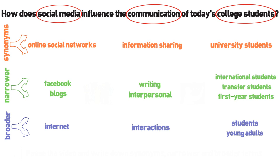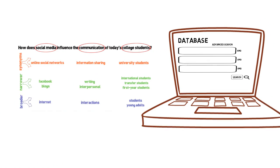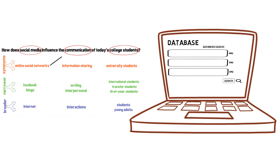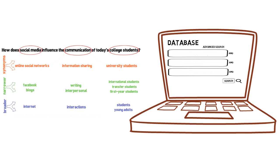Now, take a look at the words you have. You will use these words to increase or narrow your database search results. You can do this by putting a mixture of words into a search engine or database. The best search results are found by using a wide variety of search terms.